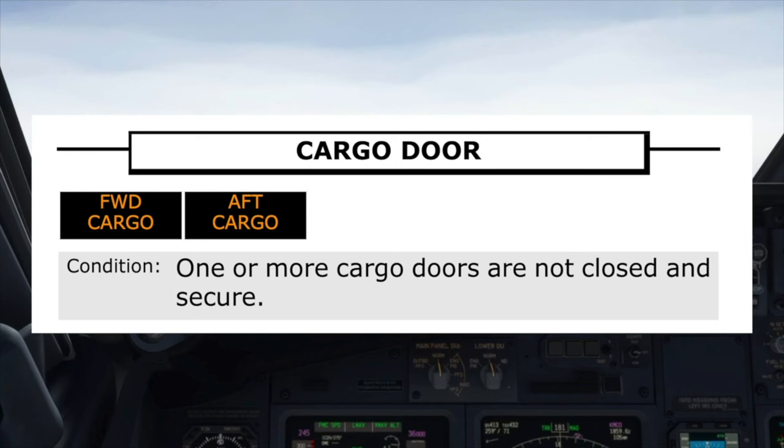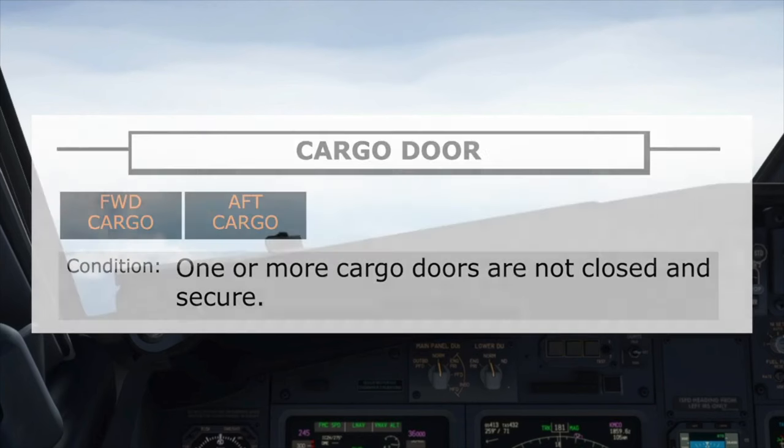Forward cargo door checklist — condition: one or more cargo doors are not closed and secure. Do you agree? Once the pilot flying agrees, the checklist is followed.